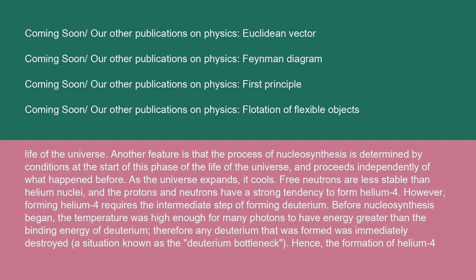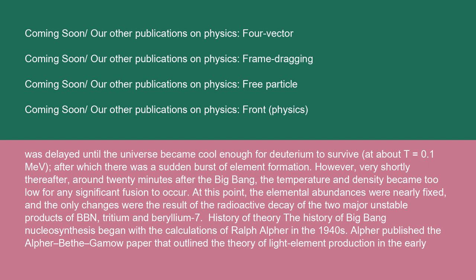As the universe expands, it cools. Free neutrons are less stable than helium nuclei, and the protons and neutrons have a strong tendency to form helium-4. However, forming helium-4 requires the intermediate step of forming deuterium. Before nucleosynthesis began, the temperature was high enough for many photons to have energy greater than the binding energy of deuterium. Therefore, any deuterium that was formed was immediately destroyed, a situation known as the deuterium bottleneck. Hence, the formation of helium-4 was delayed until the universe became cool enough for deuterium to survive, at about T = 0.1 MeV, after which there was a sudden burst of element formation. However, very shortly thereafter, around 20 minutes after the Big Bang, the temperature and density became too low for any significant fusion to occur.